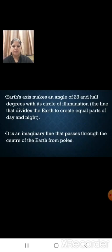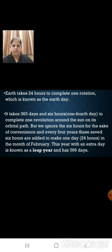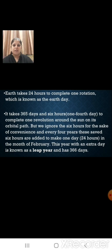The earth's axis makes an angle of 23.5 degrees with its circle of illumination — that is the imaginary line that passes through the centre of the earth from poles, dividing it into equal parts of day and night. The earth takes about 24 hours to complete one rotation, which is known as the earth day. It takes about 365 days and 6 hours to complete one revolution around the sun on its orbital path, but we ignore the 6 hours for the sake of convenience.